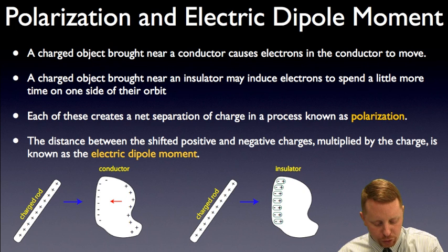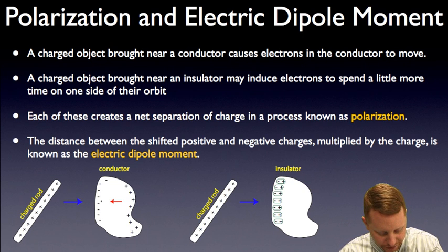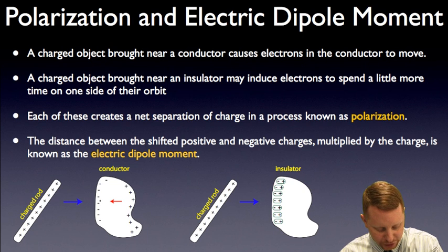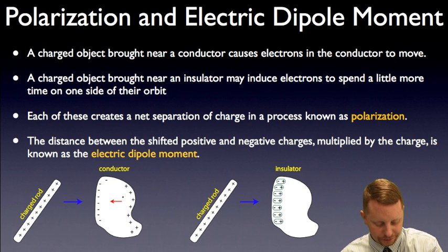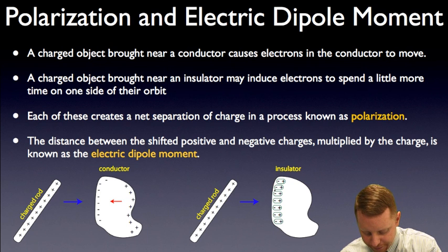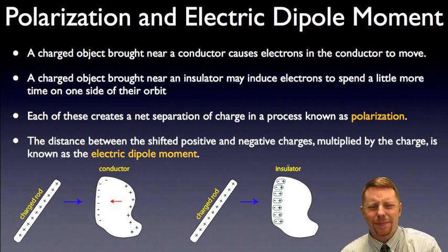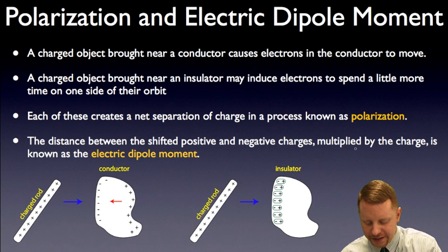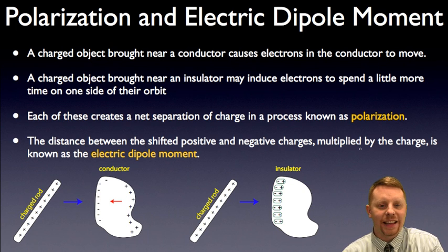As we talk about polarization and electric dipole moment, what happens when a charged object is brought near a conductor? If we look down here in the lower left, if we bring this positively charged rod over toward the conductor, the positive charges in the rod are going to attract the electrons — the opposite charges in the conductor. They're going to come over to the side of the charged rod, leaving net positive charge on the other side of the conductor. We have induced a separation of charge. On the other hand, if we look at what happens with the same scenario but an insulator, on the bottom right we have a positive charged rod coming near an insulator. The charges aren't free to move in an insulator, but as that rod gets close, the electrons in the atoms near it can spend just a little more time on the side of the charged rod which they're more attracted to. You again get a net induced charge — a net separation of charge. The distance between the shifted positive and negative charges, multiplied by the charge itself, is known as the electric dipole moment.